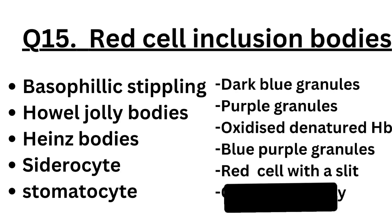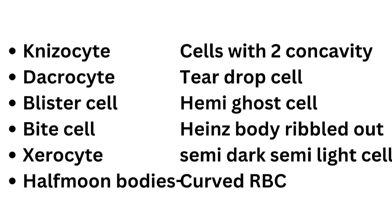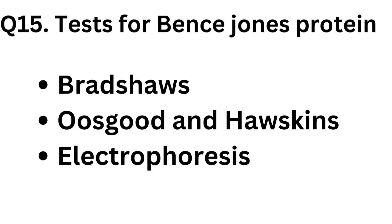Question number fifteen: red cell inclusion bodies. Basophilic stippling — dark blue granules. Howell-Jolly bodies — purple granules. Heinz bodies — oxidized denatured hemoglobin. Siderocyte — blue-purple granules. Stomatocyte — red cell with a slit. Discocyte — cells with two concavities. Dacrocyte — teardrop cell. Blister cell — hemi ghost cell. Bite cell — Heinz body expelled out. Xerocyte — semi dark, semi light cell. Half moon body — curved RBC.